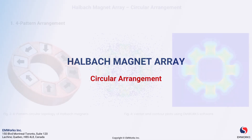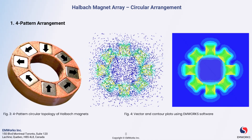Let's start with Case 1: a four-pattern arrangement of the halbach array. In this configuration, the magnets are arranged to form four distinct rings of magnetic fields. This arrangement is strategic because it optimizes the magnetic field on one side while effectively canceling it on the opposite side. As we look at the vector plot, you can see the direction and strength of the magnetic field clearly indicated.